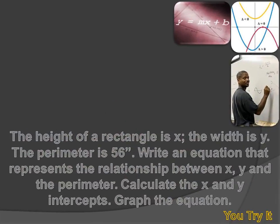You try this one. The height of a rectangle is x, the width is y, and the perimeter is 56 inches. Write an equation that represents the relationship between x, y, and the perimeter. Calculate the x and y-intercepts, and then graph the equation. The perimeter is the distance all the way around the rectangle. Hit your pause button, try the problem, and then hit your forward key to move on to my answer.